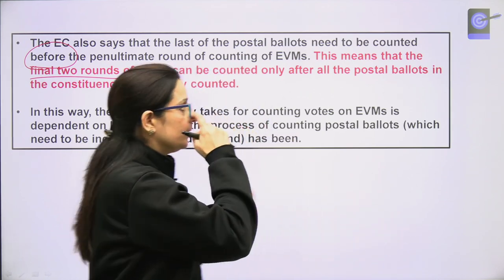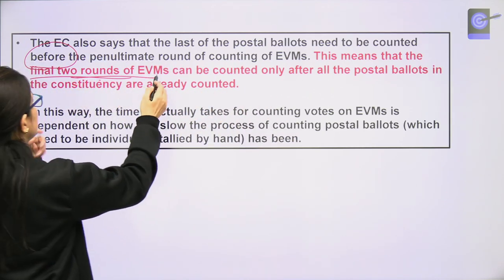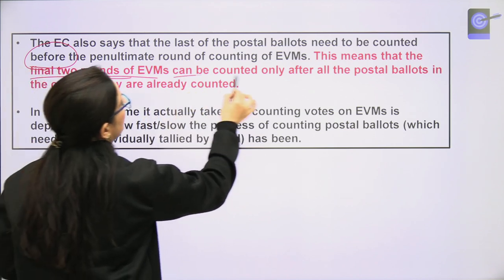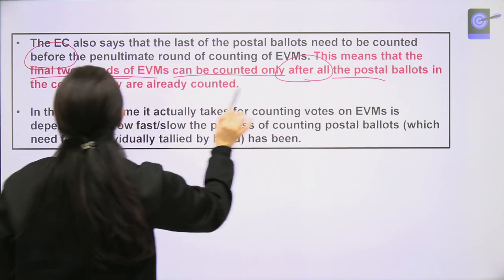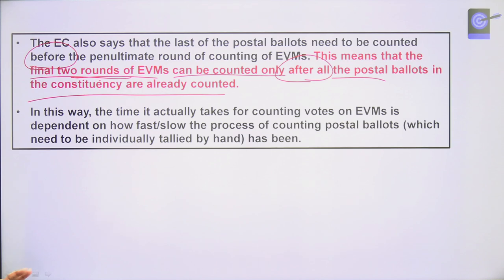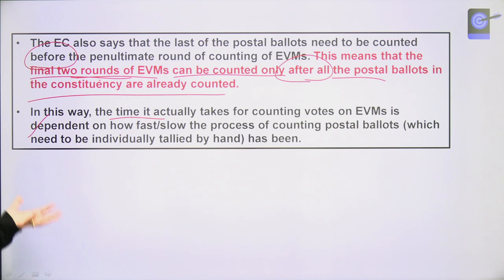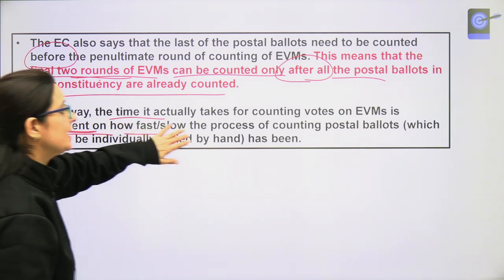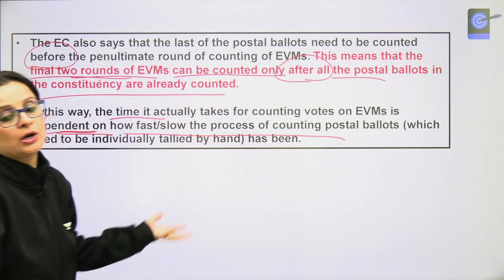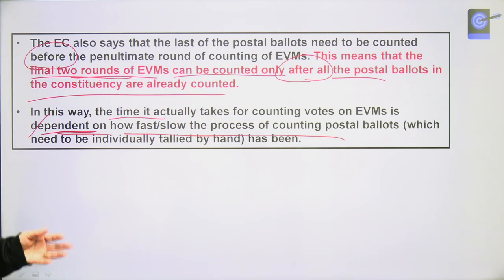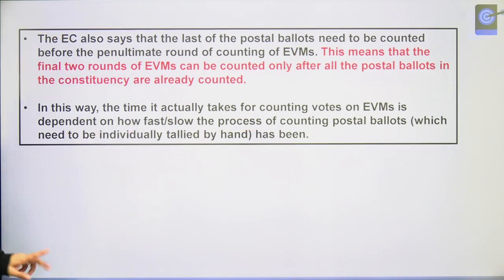So the final two rounds of EVM counting will only be done when all the postal ballots have been counted. The time of EVM counting is dependent on how fast or slow the postal ballot counting goes, because postal ballots are individually tallied by hand. This is not a machine process — it is the traditional way.